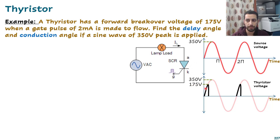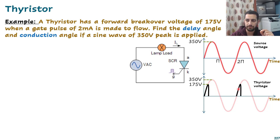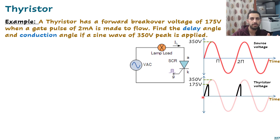Now the voltage across the thyristor is the black curve — it rises until it reaches 175 V, then triggers on via a pulse on the gate. Once the thyristor is triggered, the anode-cathode acts like a short circuit ideally, so the voltage across the thyristor drops to zero. When the voltage reaches 175 V again it triggers on again and the voltage drops to zero. The delay angle is the waiting time until we trigger it on, and the conduction angle follows after that.